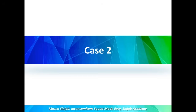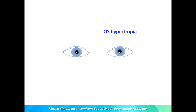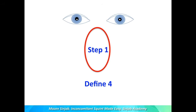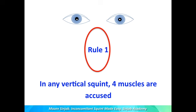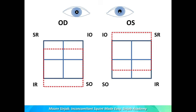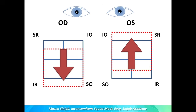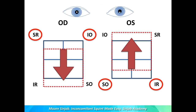Case number two: a patient came with left eye (OS) hypertropia. Step number one — define the four muscles responsible, and remember that in any vertical squint, four muscles are accused. I go to the chart and draw hypertropia in the left eye, meaning hypotropia in the right eye. The four muscles are: superior rectus and inferior oblique in the right eye, and superior oblique and inferior rectus in the left eye.